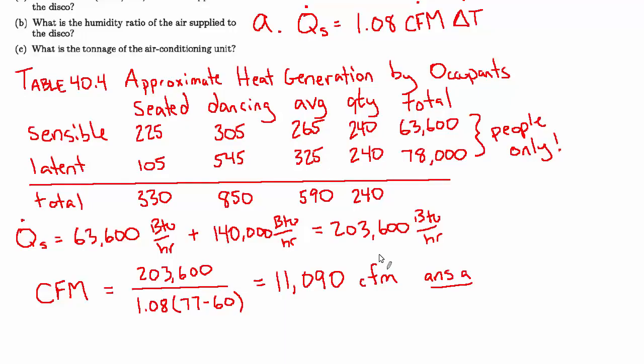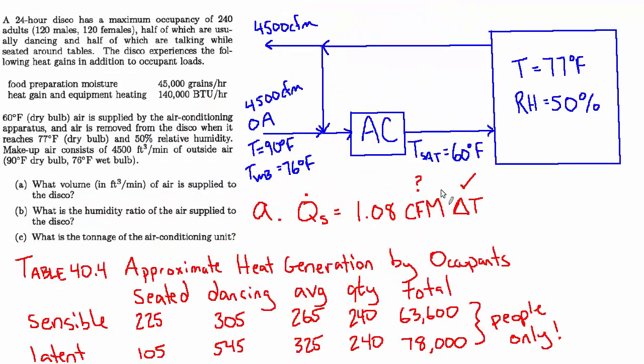So now we know the airflow that we need. The next question is: what is the humidity ratio of the air supplied to the disco? We have this 11,000 CFM of supply air. Now they want to know what's the humidity ratio of that supply air.